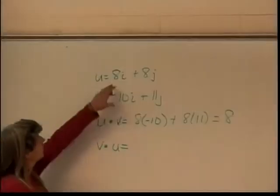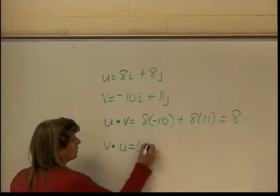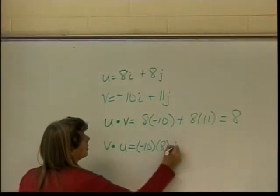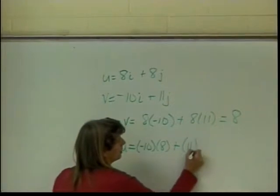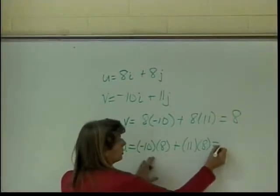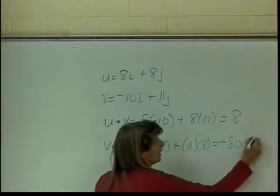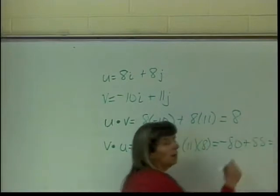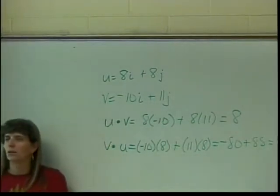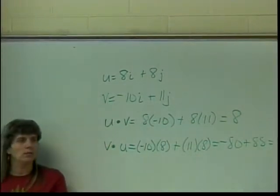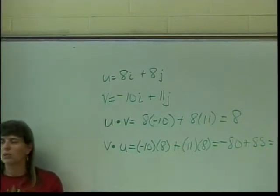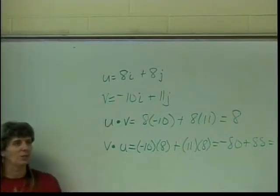I multiply negative 10 times 8, plus 11 times 8, which turns out to be negative 80 plus 88. I get 8 again. What does that tell you about the dot product of vectors? What was that word when you could rearrange them?